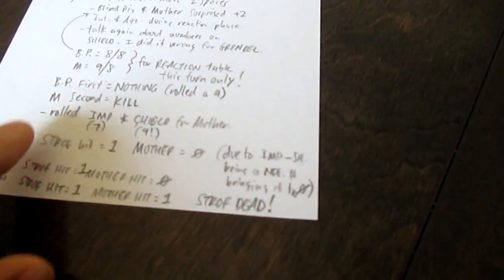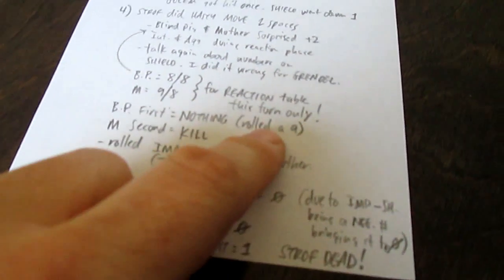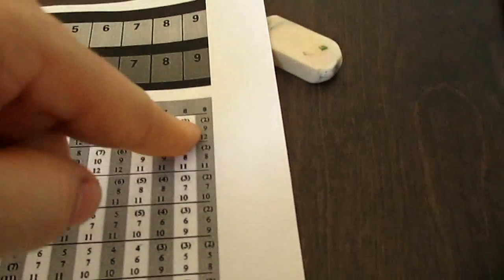This meant that on our roll the blind pig did nothing because he rolled a nine, which was out of the realm of the chart. I'll show you that right here. Blind pig was an eight-eight, so if we look at eight and go down to eight, the highest number is a six.